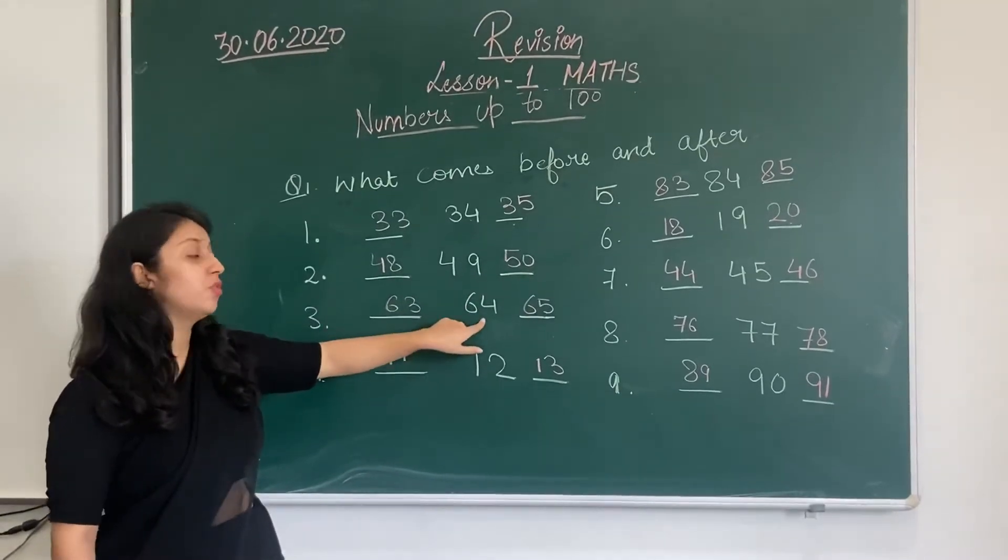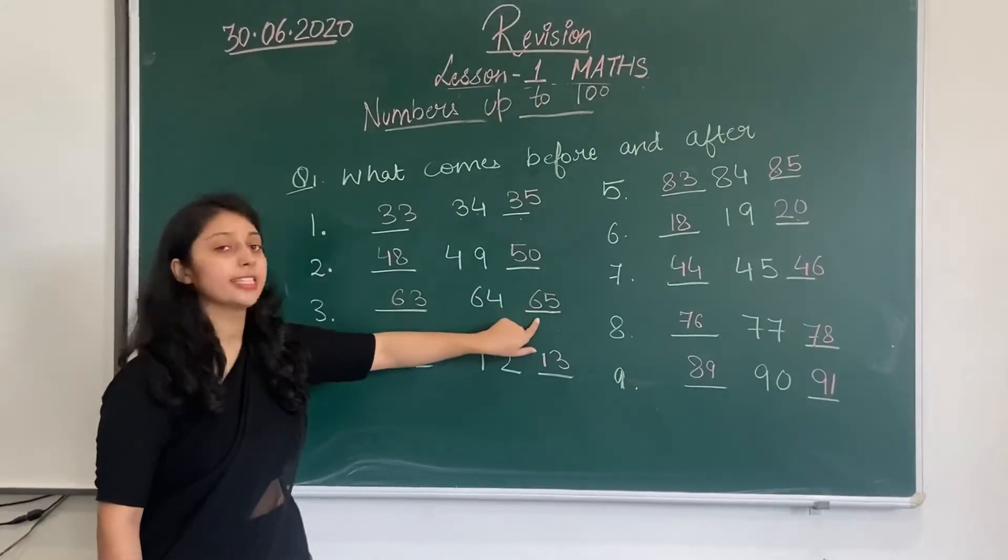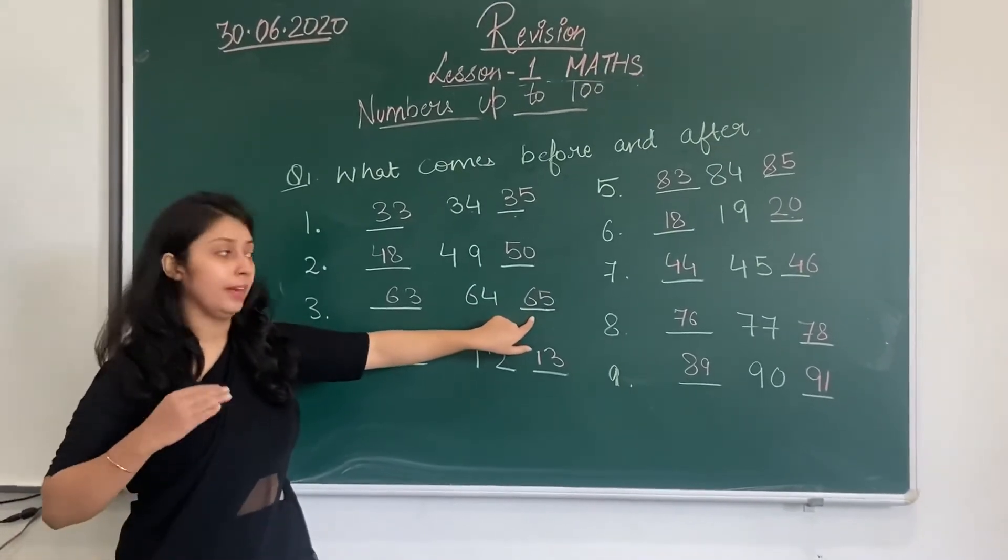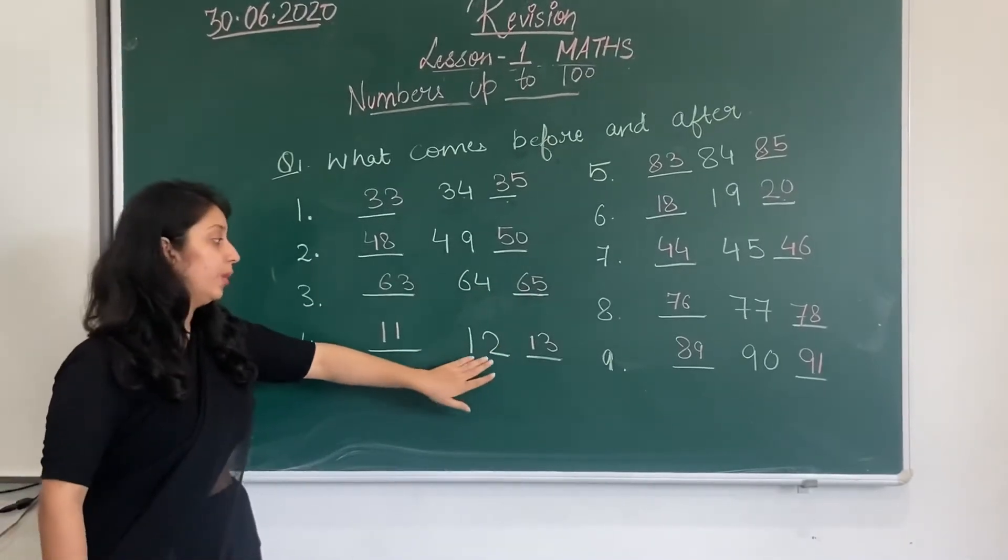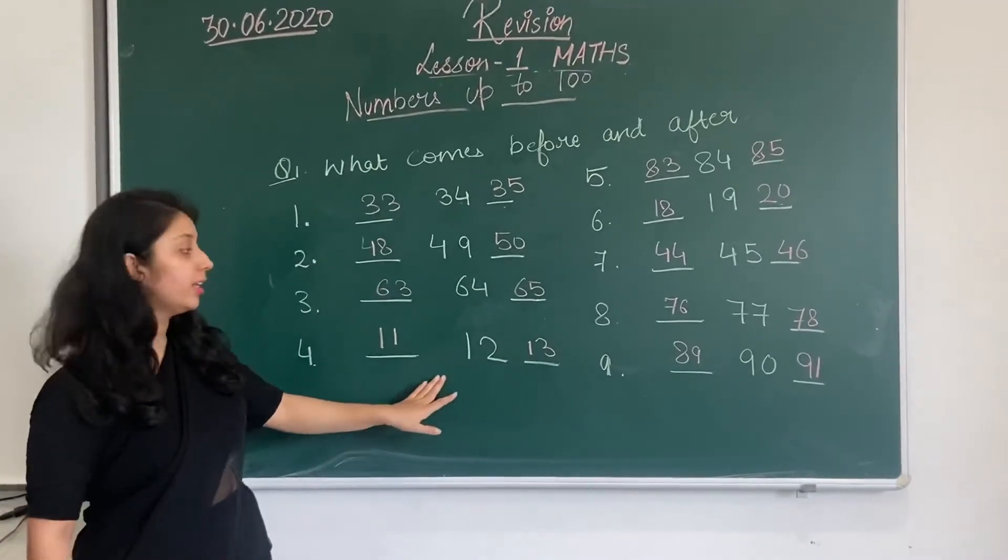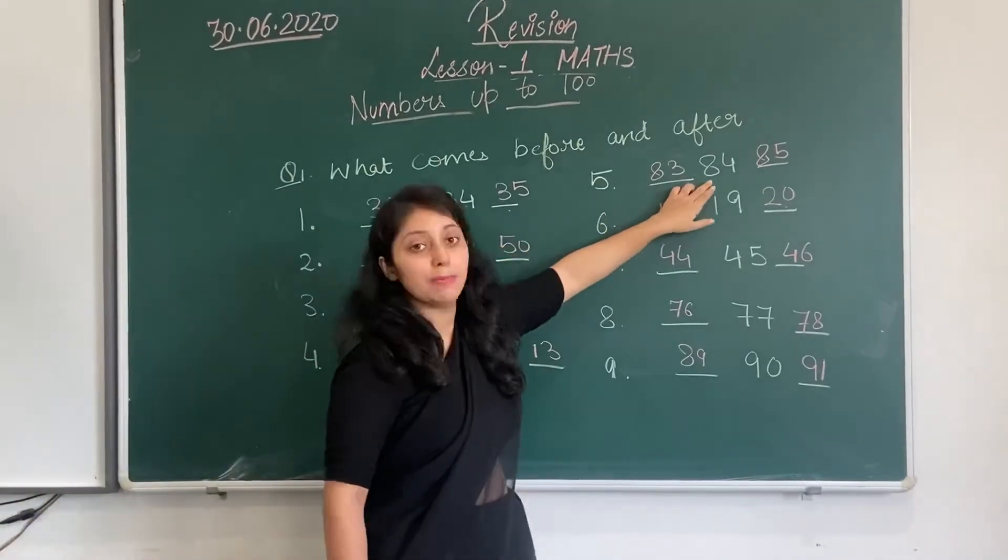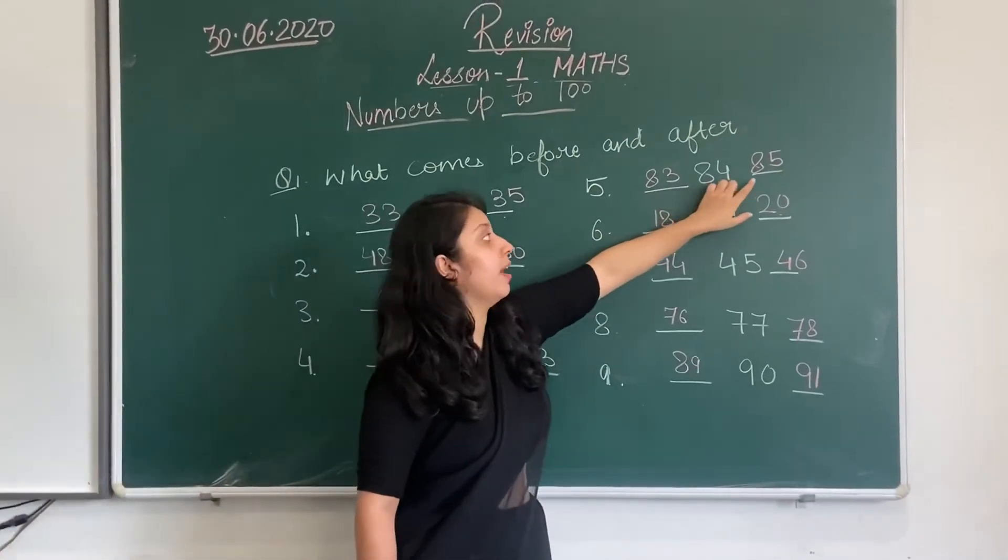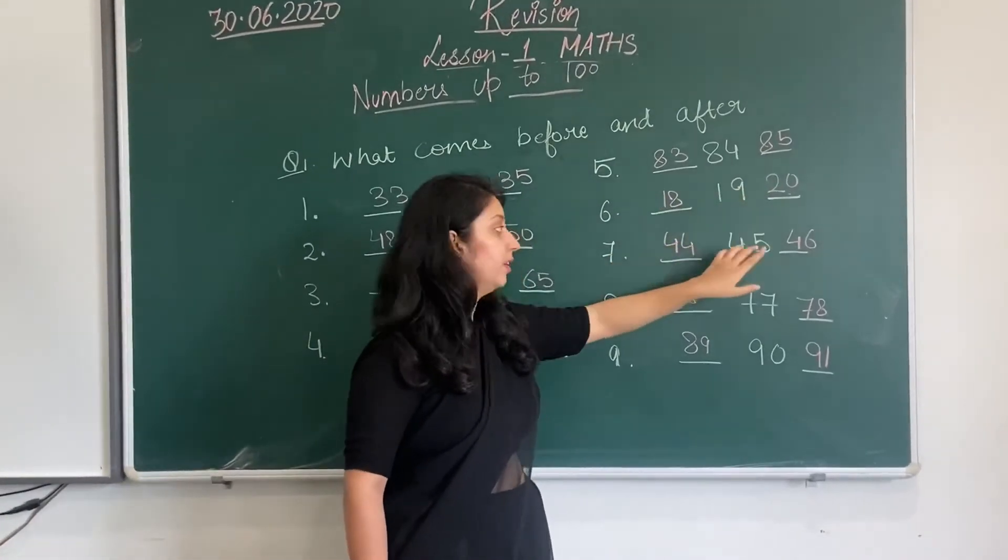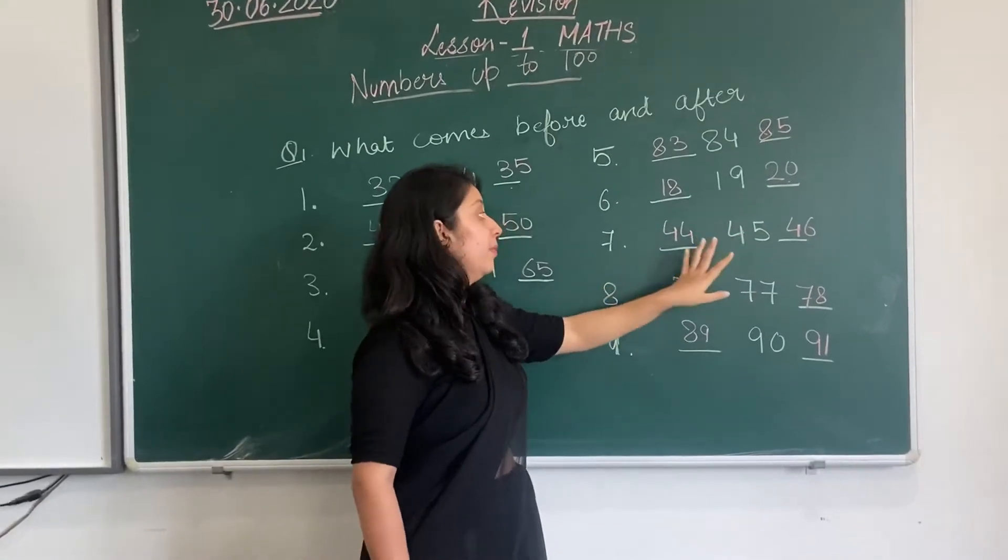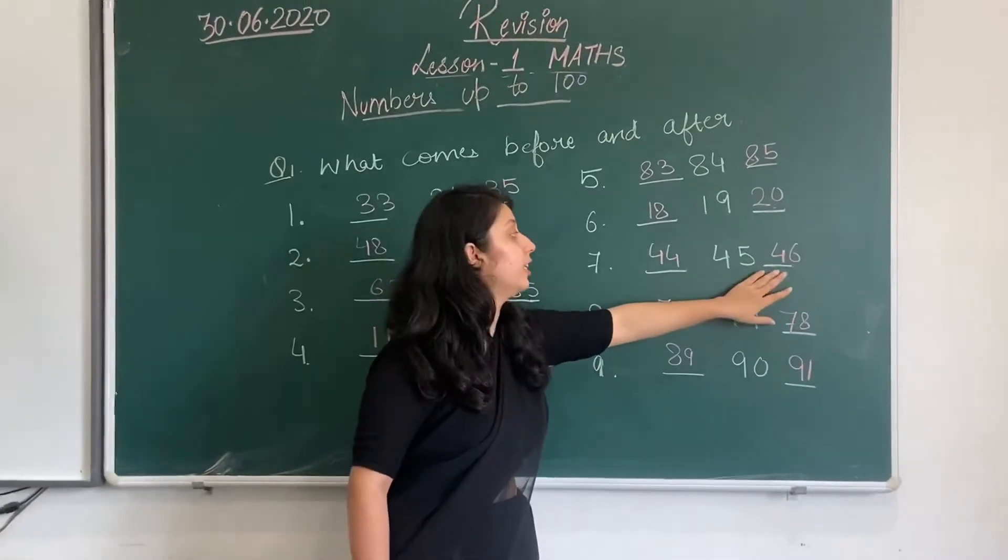The third question is 64. Before 64 comes 63, and after 64 comes 65. Fourth question is 45. Before 45 comes 44, and after 45 comes 46.